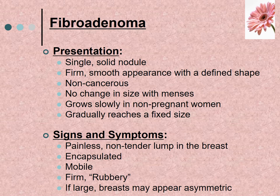It is a single solid nodule that is firm with a smooth appearance and a defined shape. It is non-cancerous and shows no change in size with menses. It grows very slowly in non-pregnant women until it reaches a fixed size. Symptoms include a painless, non-tender lump that is encapsulated, contained, mobile, firm, and feels somewhat rubbery. If very large, the breast may appear asymmetric.